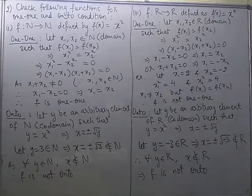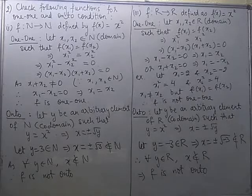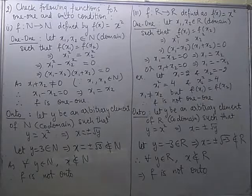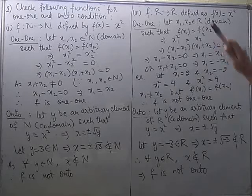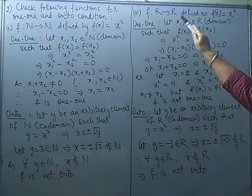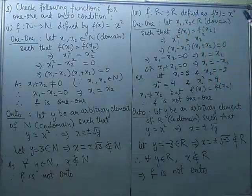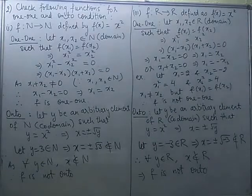Now see the third part. In the third part, the domain and codomain are replaced by ℝ, the set of real numbers. So this time the function is from real numbers to real numbers, defined in the same way: f(x) = x².